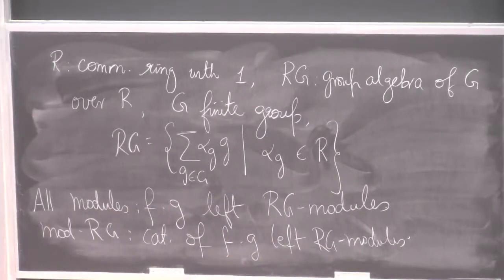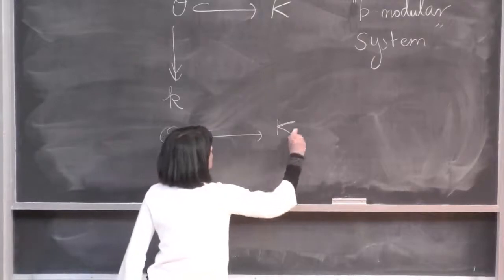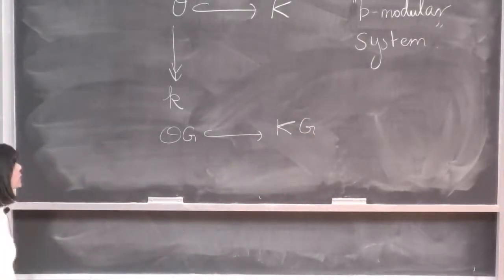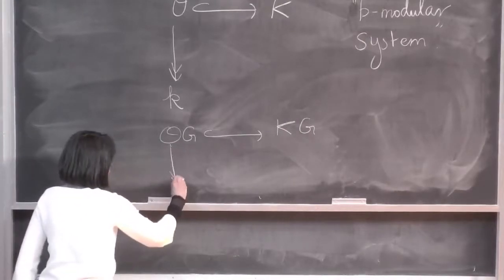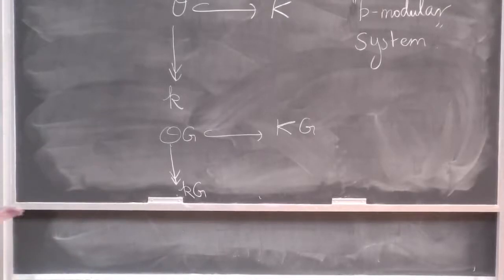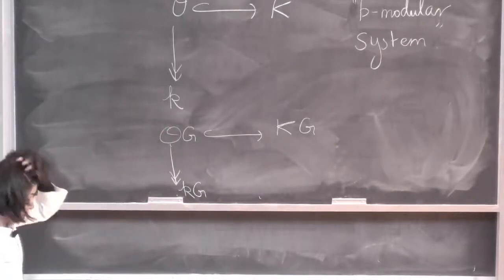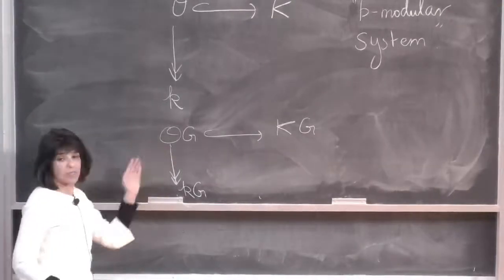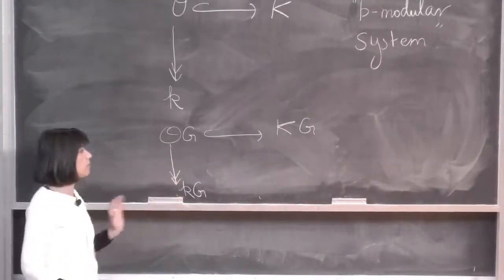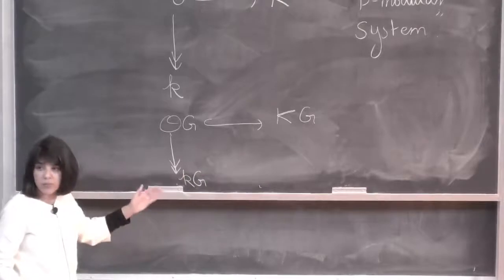I will also use mod-RG, the category of finitely generated left RG modules. This picture on the coefficients gives us three group rings: OG contained in capital KG, surjecting onto little KG — inclusion here, and reduction of coefficients modulo pi. We want to consider these three together: representations over these three different rings, or the structure of these as algebras.